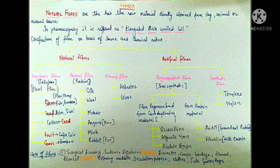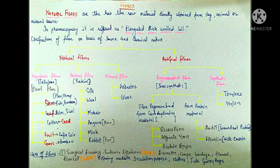Synthetic fibers are totally artificially made — unlike semi-synthetic, there is no natural starting material involved. Examples are terylene and nylon. Terylene is a polymer of terephthalic acid and ethylene glycol. Nylon is a polymer of adipic acid and hexamethylenediamine. So both are polymers but made from entirely different chemical components.